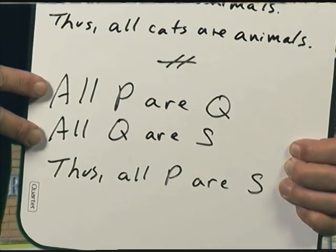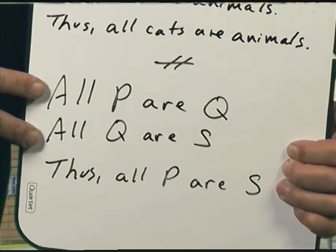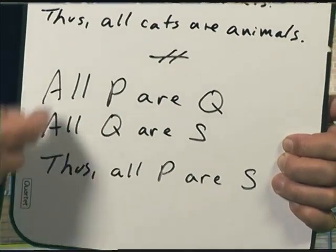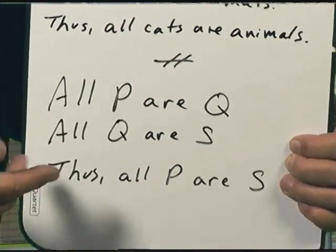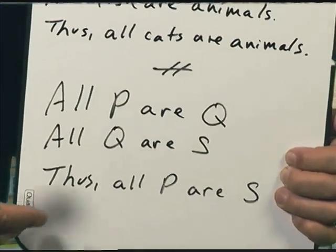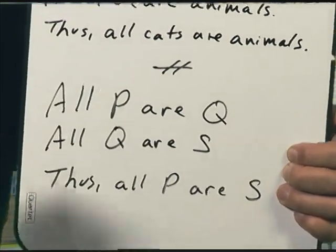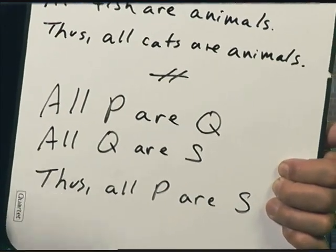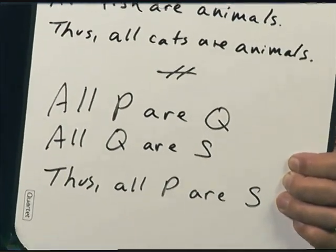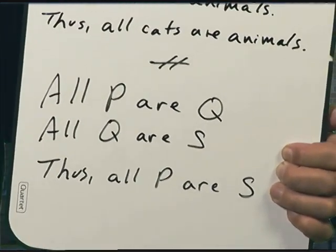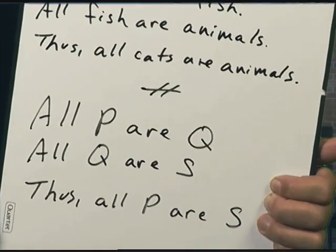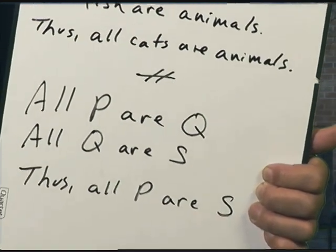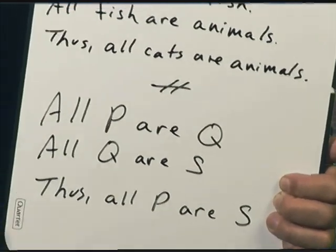And if you're saying yes — if you see that if these two were true, this would be guaranteed — you're doing logic, and you're doing exactly the kind of thing we need to do in this class. We're going to learn techniques to be able to prove this is a valid argument, and build on that innate understanding you already have that if this is the case and this is the case, then this would have to be the case.